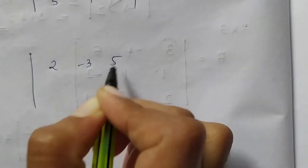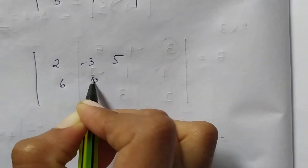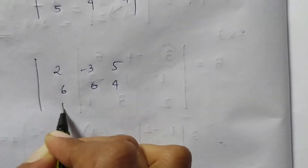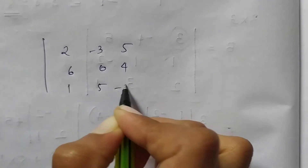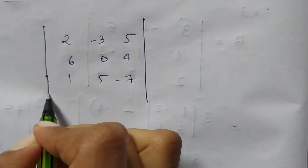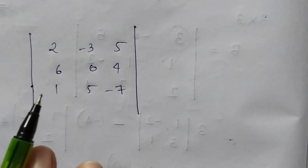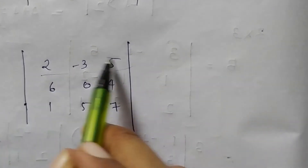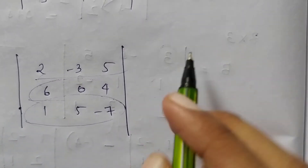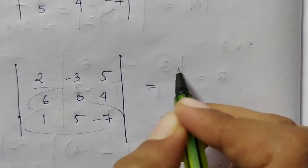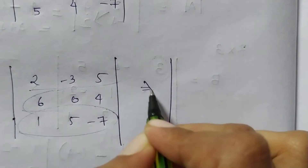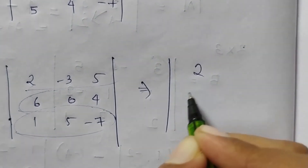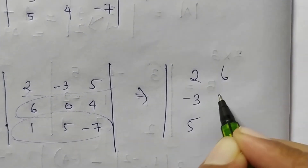For example, we have a determinant with values 2, minus 3, 5, 6, 0, 4, 1, 5, minus 7. The first property says: if we change the rows and columns of a determinant, the value remains the same.